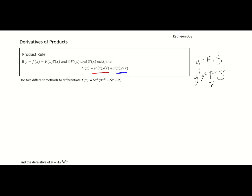We're going to use two different methods to differentiate f of x equal to 5x squared times (3x squared minus 5x plus 2). I'll underline the product: this is your first function F — that's 5x squared — and this is your second S, which is 3x squared minus 5x plus 2. That's why it's called the product of two functions.